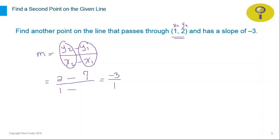We also need to figure out: one minus what will give you a one? If we know the missing information on the top and the bottom of the formula, that will give us the second point we are looking for.